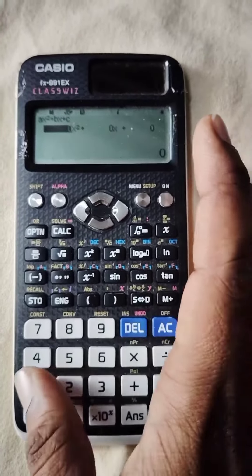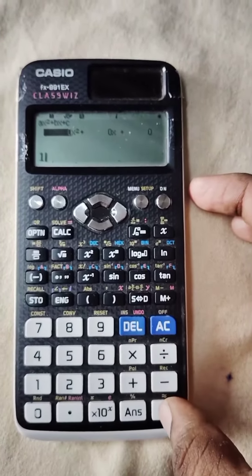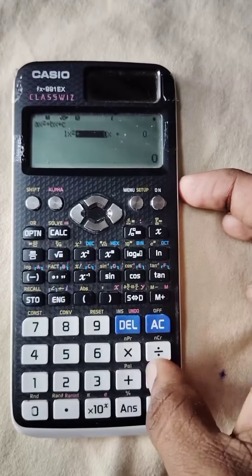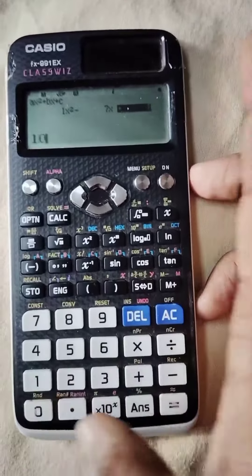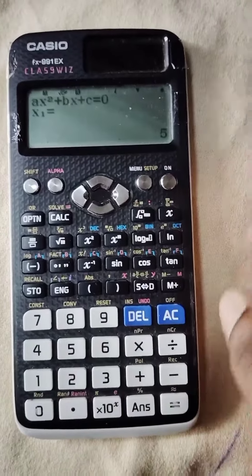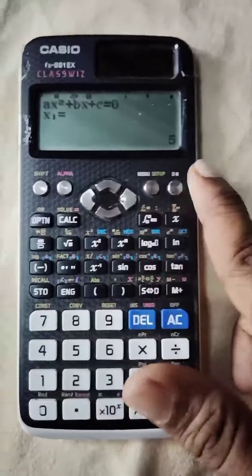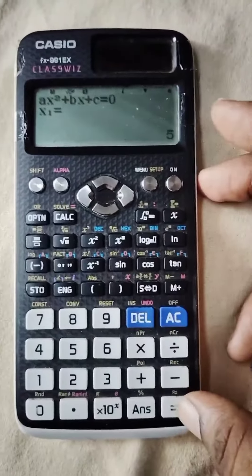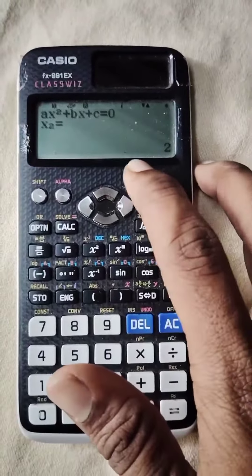Enter the equation: x squared minus 7x plus 10. If you press the first root here, x1 equals 5. x2 equals 2, so the second root.